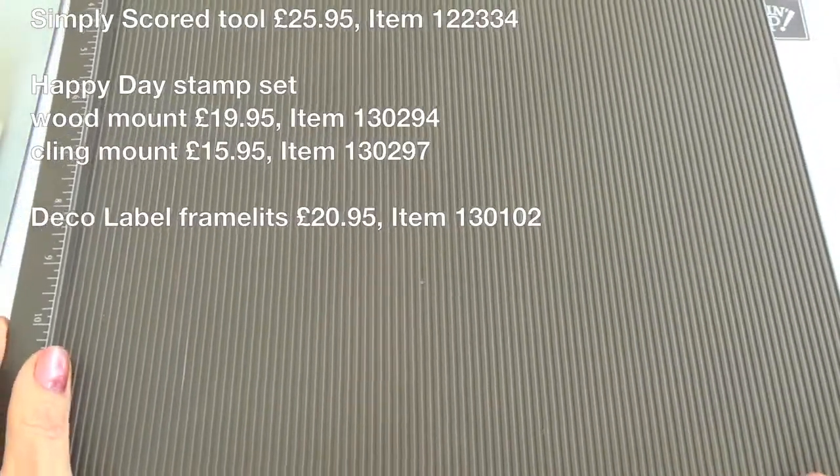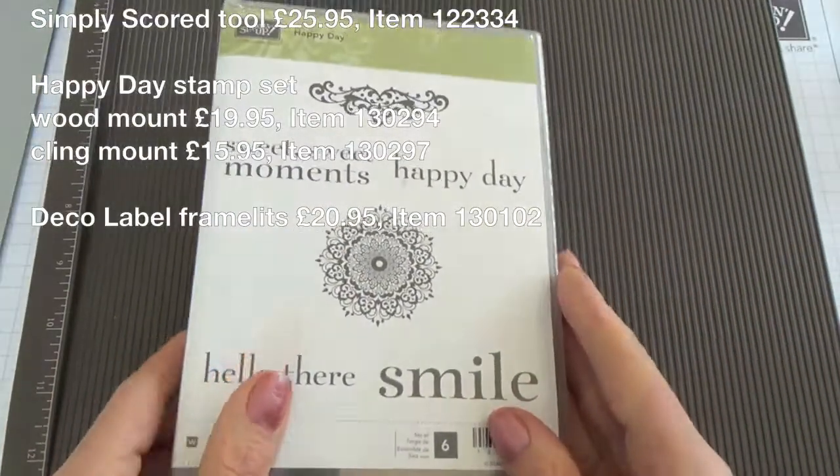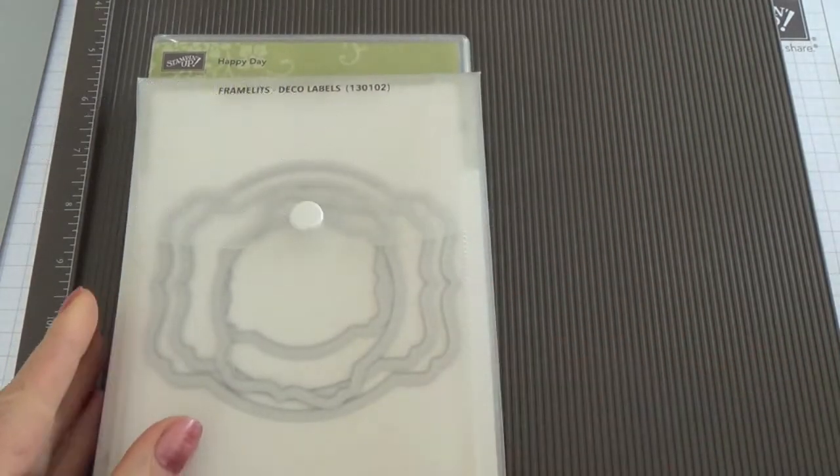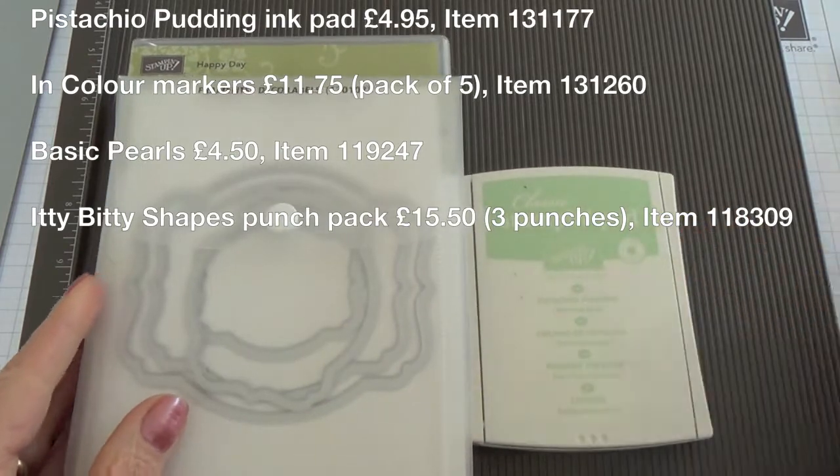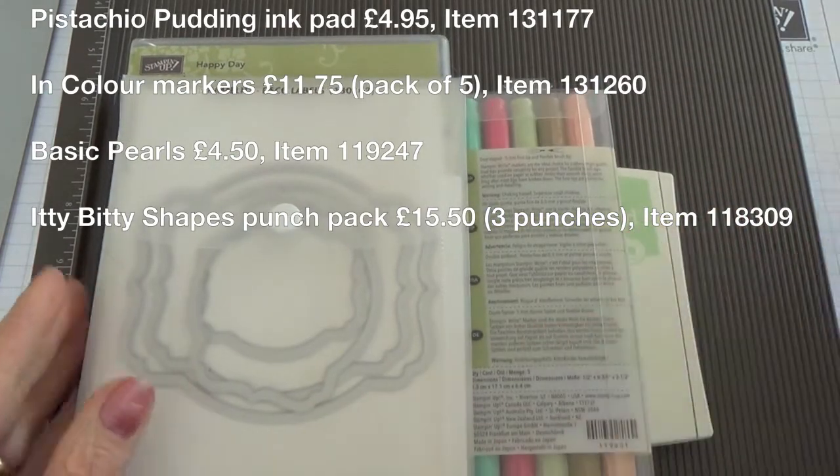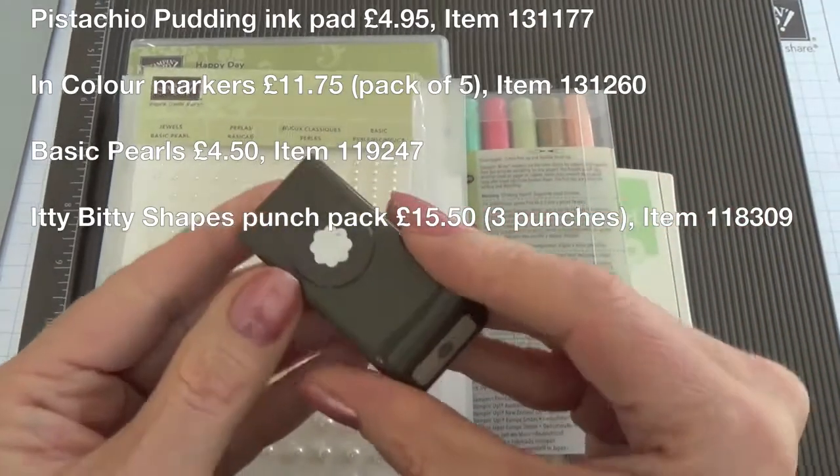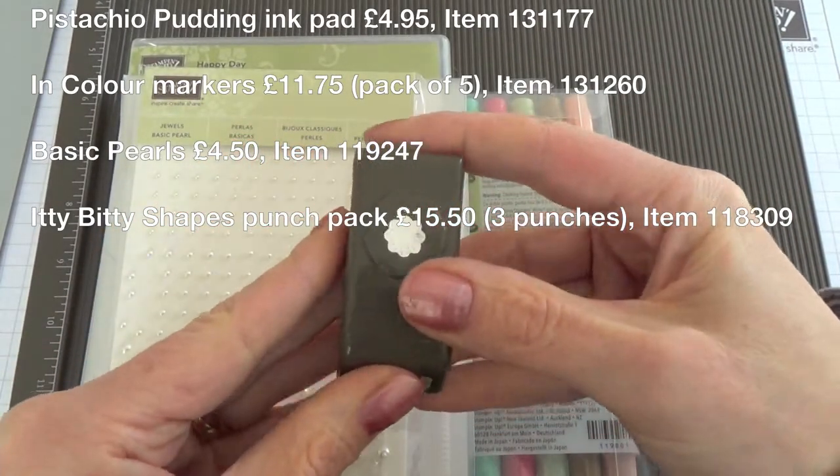Here's what you'll need to make the box. A simply scored tool, a happy day stamp set, deco labels framelits, a pistachio pudding ink pad, in colour markers, basic pearls to decorate and one of the little flower punches from the Itty Bitty Punch Pack.